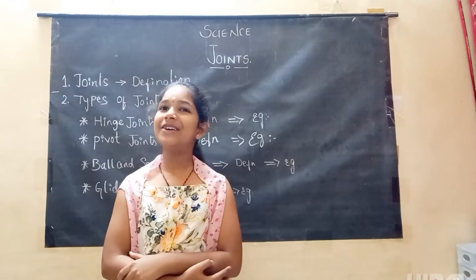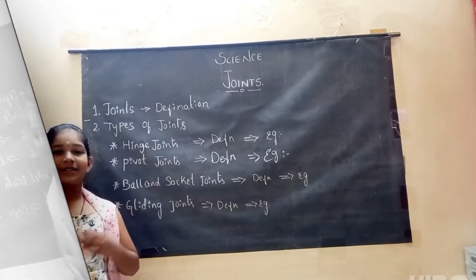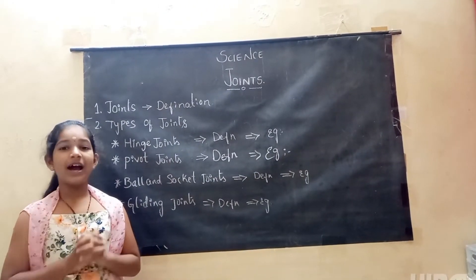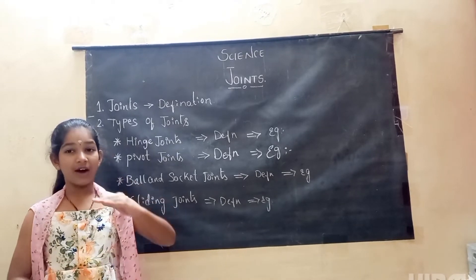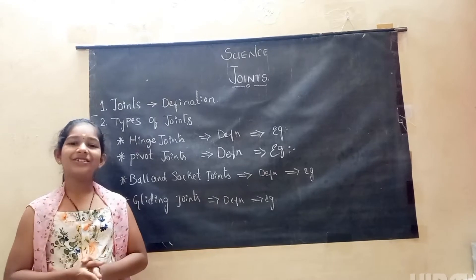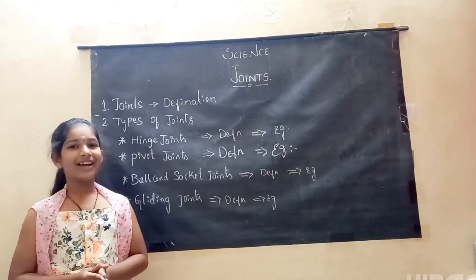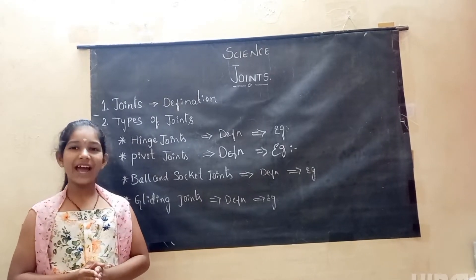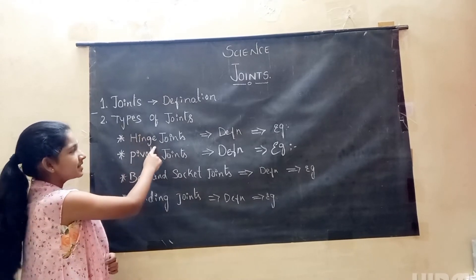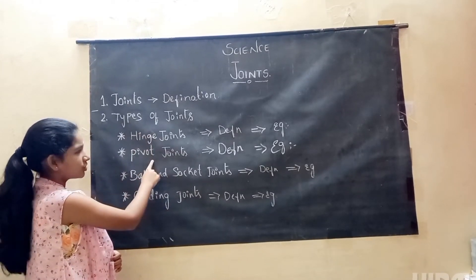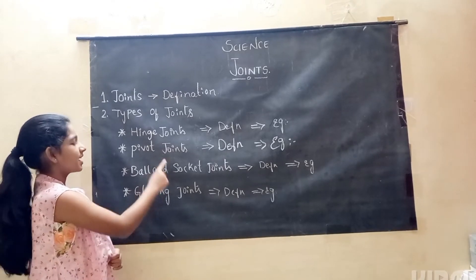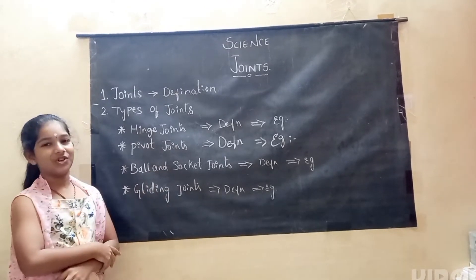Come let us learn about joints today. The definition of the joint is: a joint is a place where one bone meets another bone. Now let us move to the types of joints. There are four types: hinge joints, pivot joints, ball and socket joints, and gliding joints.